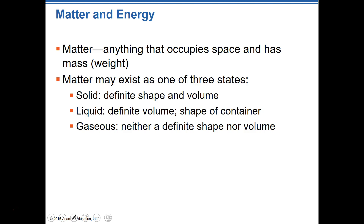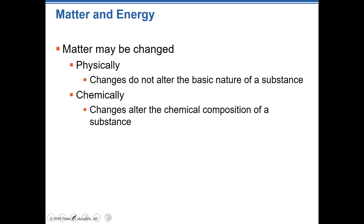We wouldn't survive in space not only because we'd lack nutrients, but also because we wouldn't have the pressure and weight we're normally used to here at sea level. Matter also exists in one of three states — this shouldn't be anything new: solids, liquids, and gases. Those are the three states we typically find matter in, and depending on what a particular thing is, that will determine what its state is going to be.